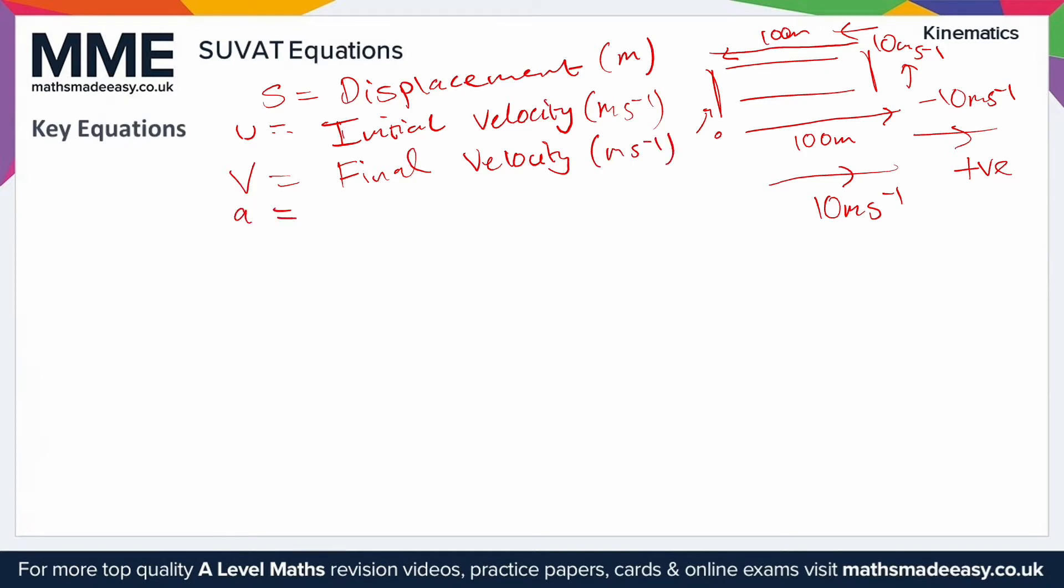Then we have A, which is acceleration, and that's in meters per second squared. That's how fast something changes velocity, so it's a rate of change of velocity.